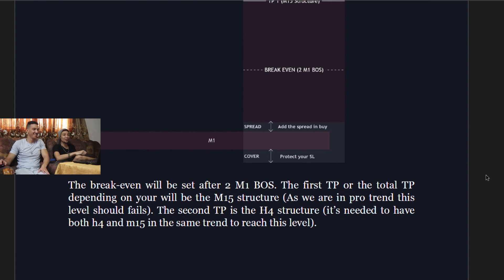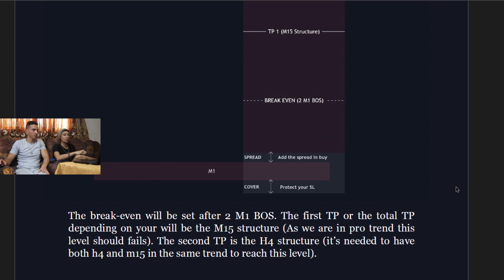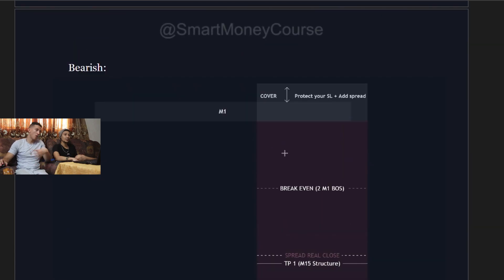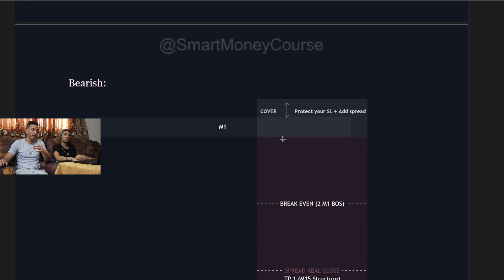The break-even is set after two one-minute break-of-structures. The first take profit or total take profit — depending on your preference — is at the 15-minute structure, which should be a failed level in pro-trend. The second take profit is at the four-hour structure. To reach that level you need both the four-hour and 15-minute in the same trend. On the bearish example the same logic applies — just inverted.